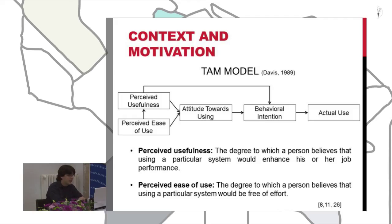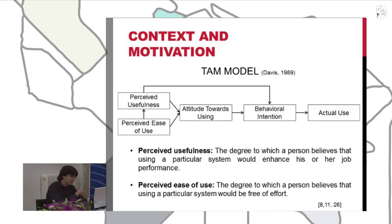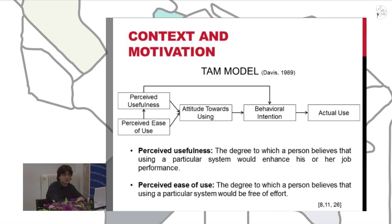These two concepts condition the attitude toward using, which is complemented by the beliefs of a person. This attitude toward using conditions the behavioral intention of using a system, and this behavioral intention conditions the actual use. Davis recognized the existence of external variables that can affect perceived usefulness and perceived ease of use, but in its original model he didn't elaborate on them. He also built an instrument based on a Likert-type scale in order to analyze these five concepts.